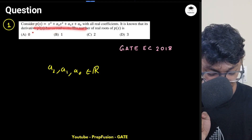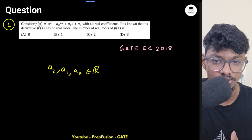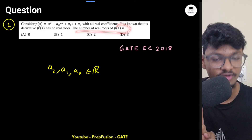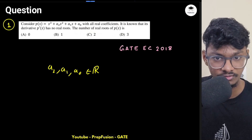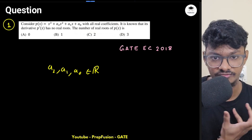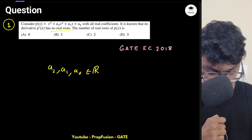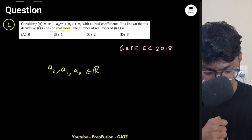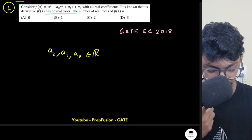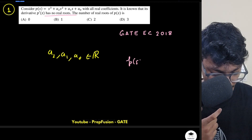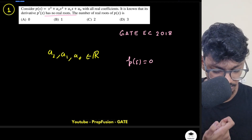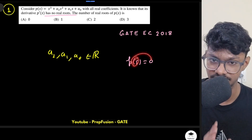So I know the derivative of this function doesn't have any real root. They are asking about the number of real roots of p(s), and they've given me information about the derivative. What does it mean to have no real roots? Roots mean that if I equate p(s) = 0, the equation is satisfied — for a particular value of s, it satisfies the equation.